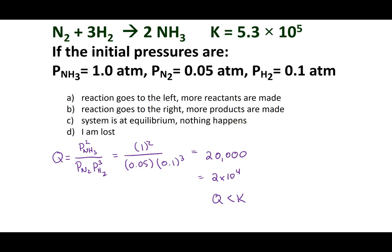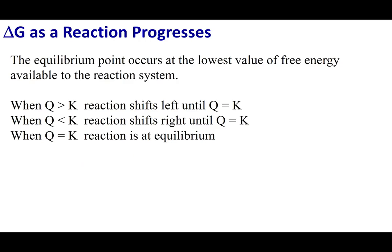So the first thing we note is we're not at equilibrium. And because Q is less than K, I have to make more products. So just to remind you guys, if Q is greater than K, I'm going to shift to the left until Q becomes K. If I'm like the last quiz question where Q is less than K, I'm going to shift to the right until Q equals K. And if Q equals K, I'm at equilibrium. We've been through this idea.